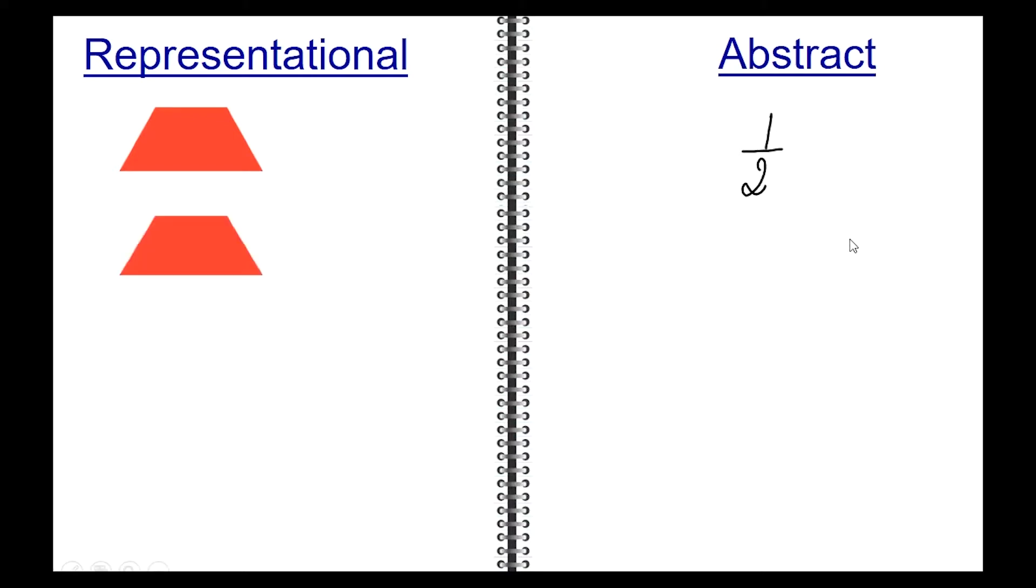So if two of the trapezoids are provided, that is equivalent to two halves. Extending the same to one more trapezoid, the abstract can now be written as three halves, and three halves is a fraction that is greater than one.